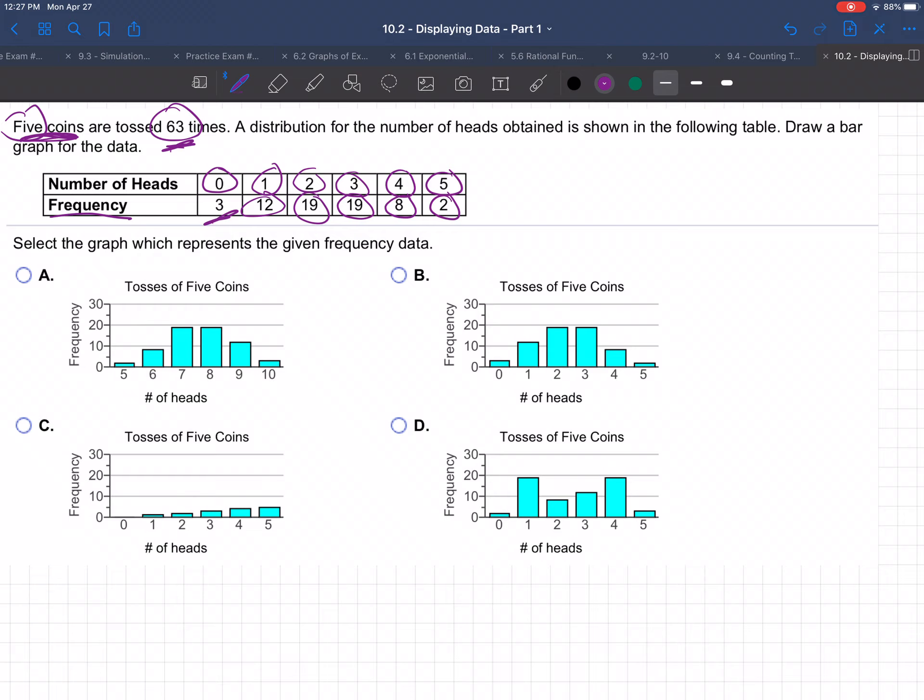So which one of those is the right graph? They got zero heads three times. Look, this has number of heads five, six, seven. It's totally wrong. You can't get ten heads. So they got zero heads three times. That looks pretty right.